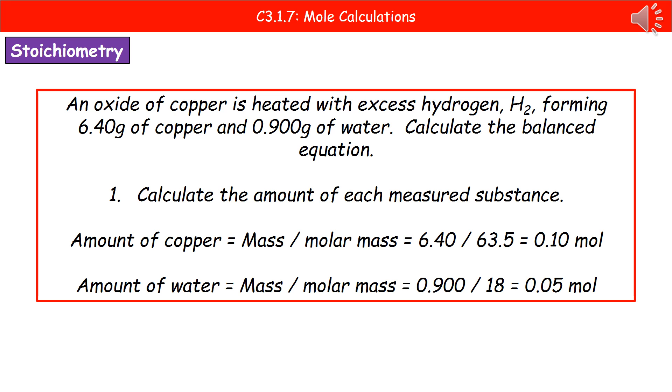The first thing we need to do is calculate the amount of each measured substance. In this case, if we look at our question, we've got a measured amount of water and of copper. We're going to work out the amount in moles of the copper and the amount in moles of our water. To do that, we go back to our mass divided by molar mass equation. So mass of copper, 6.40 from the question, divided by its molar mass, which we'll get from the periodic table, is 63.5. So that gives us an amount of 0.10 moles.